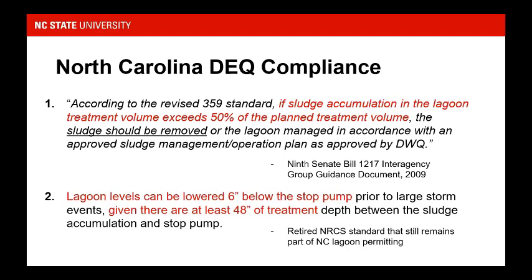The second is a retired NRCS standard that has continued to stay part of North Carolina lagoon permitting. It states that during the months of June through September — our hurricane season — lagoons can be drawn down six inches below the stop pump, as long as you have 48 inches between the top of your sludge and your lagoon level. It's important to note that we don't really know the basis for these numbers; the 48-inch rule is somewhat arbitrary. Part of our study looks into whether these are valid assumptions and whether we need to change them going forward for lagoon management.